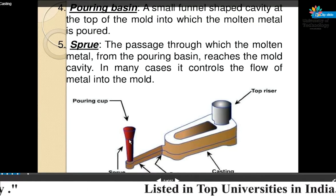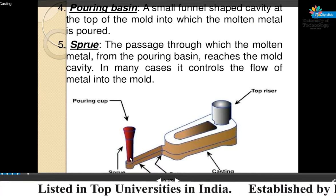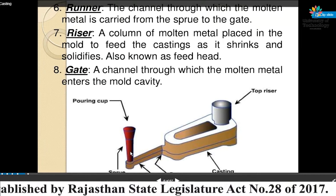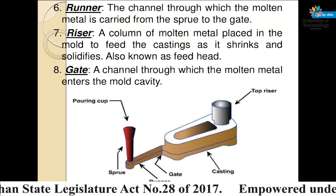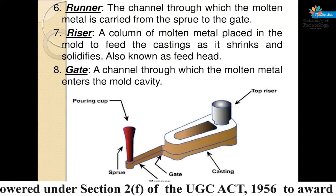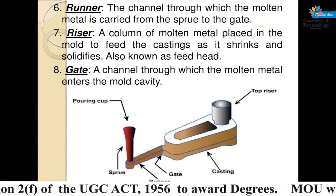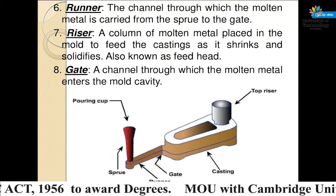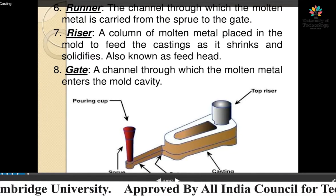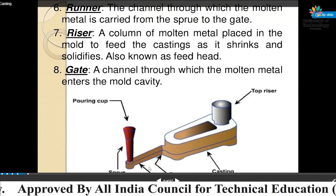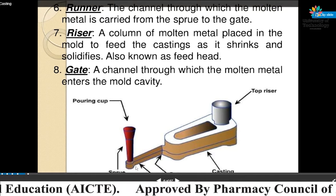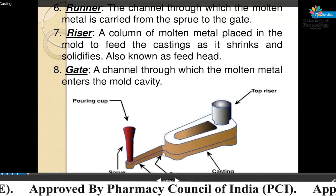Runner — the channel through which the molten metal is carried from the sprue to the gate. We can see in this figure the runner, from one point to another, and that is called the runner.